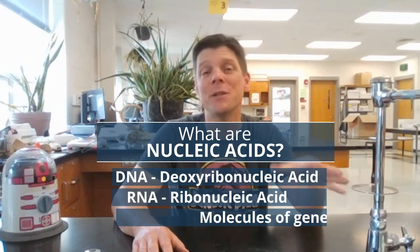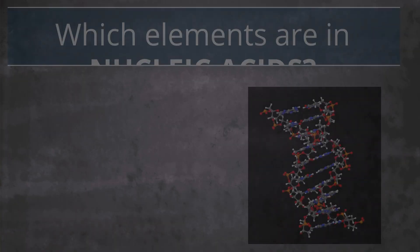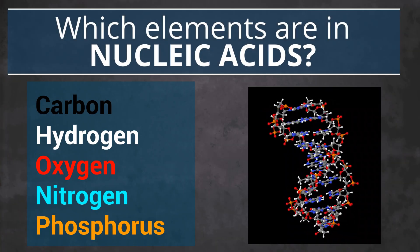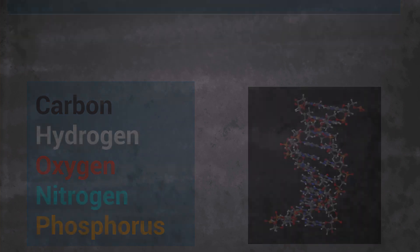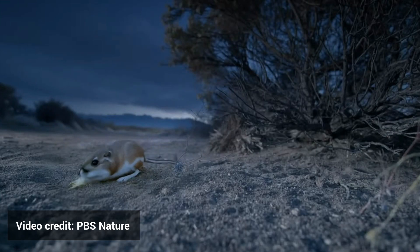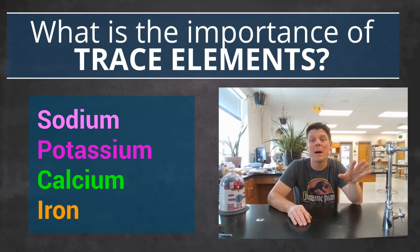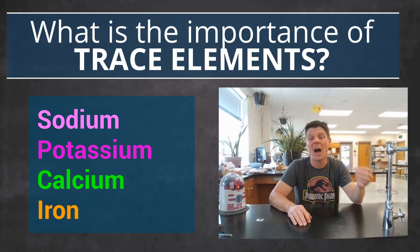Nucleic acids include DNA and RNA. These molecules play important roles in genetics and are made of carbon, hydrogen, oxygen, nitrogen, and phosphorus. Rock pocket mice and kangaroo rats eat a primary diet of seeds that contain a combination of lipids, carbohydrates, and proteins. There's actually a small amount of DNA and RNA in those seeds too — not enough to register on a dietary label, but they're in there. Their diet will also provide small amounts of trace elements like sodium, potassium, calcium, and iron, to name a few.